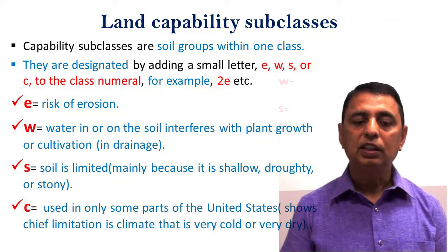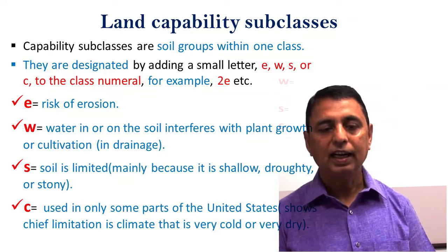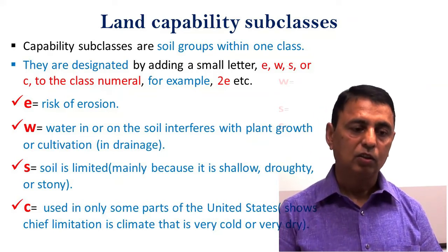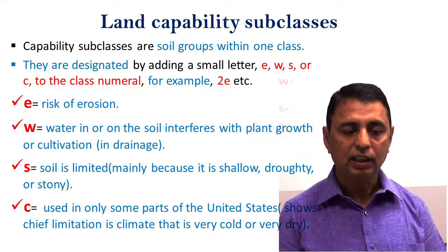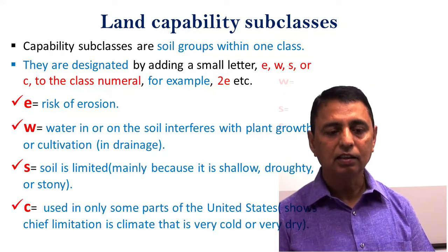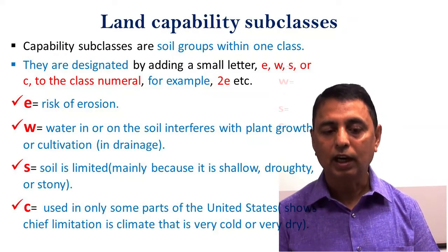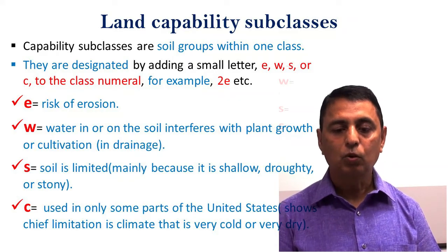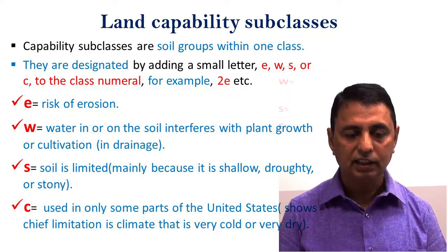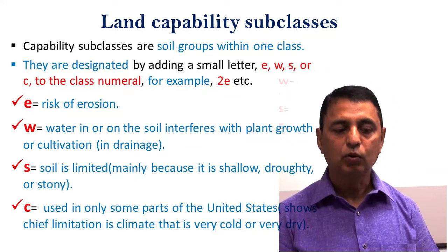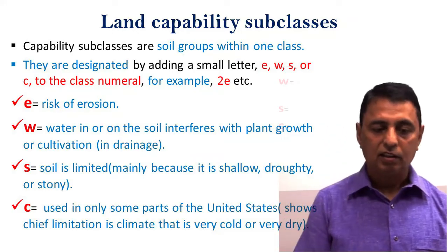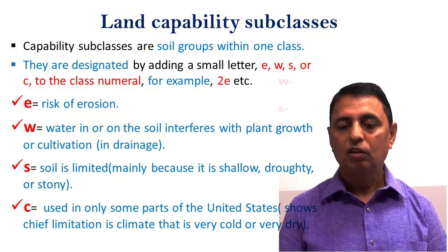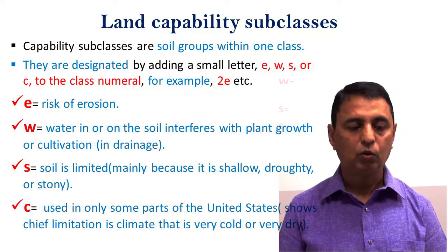So 2E indicates a limitation of erosion — E represents the risk of erosion. If W is present, it means water in or on the soil interferes with plant growth or cultivation due to drainage issues. S indicates a soil limitation.